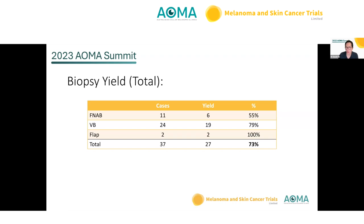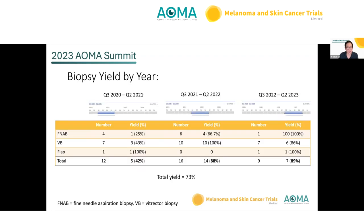The total overall yield was 73%. Separating by year: the first year had an appalling 42% yield only, but there was an encouraging increase in the second year to 88%, and in the third year 89%, with only one vitrector biopsy failing.